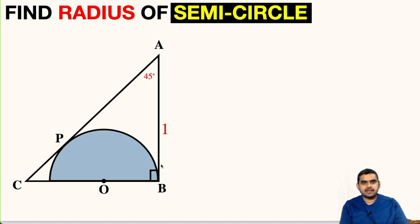In this question, we have a right triangle and inside it we have a semicircle. We have to find the radius of this semicircle. The things that are given to us are angle A is 45 degrees and the measure of side AB is one unit.